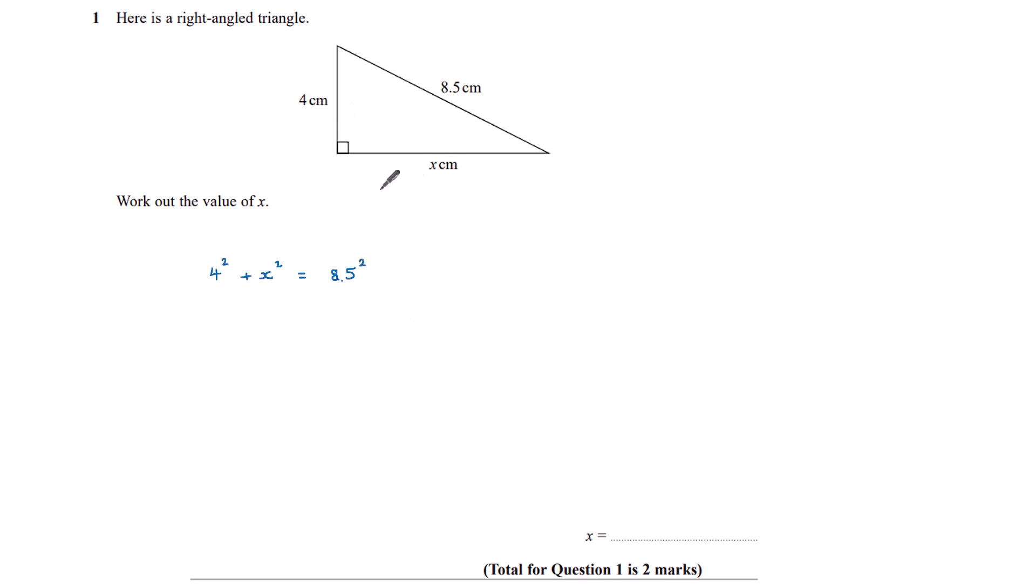So the square of 4, add the square of x, is equal to the square of 8.5. 4 squared plus x squared is 8.5 squared. This is a calculator paper, that's 16 plus x squared is 72.25.